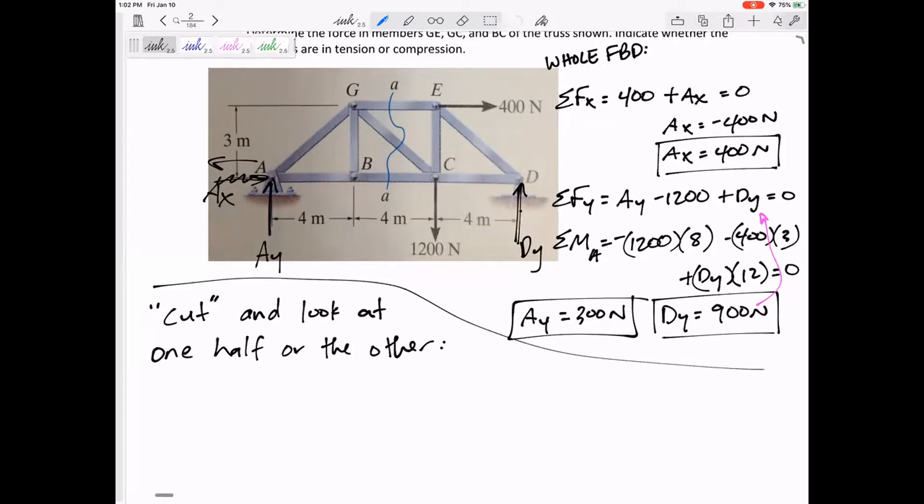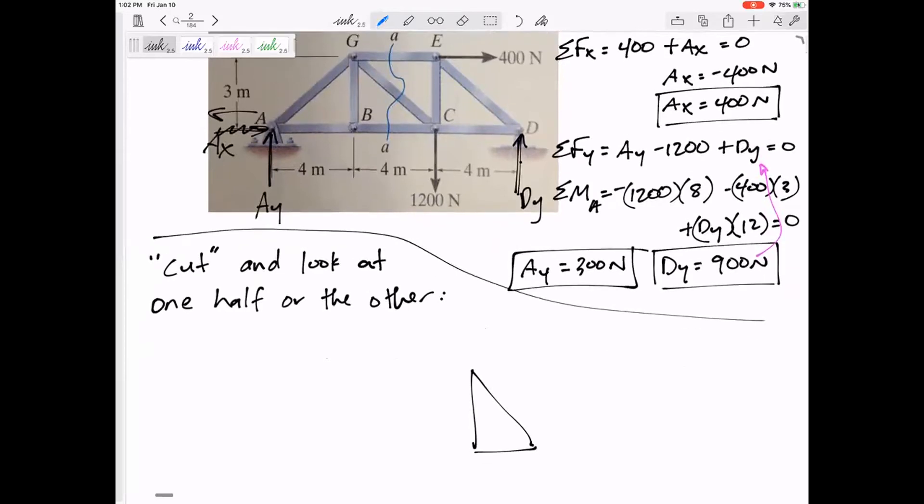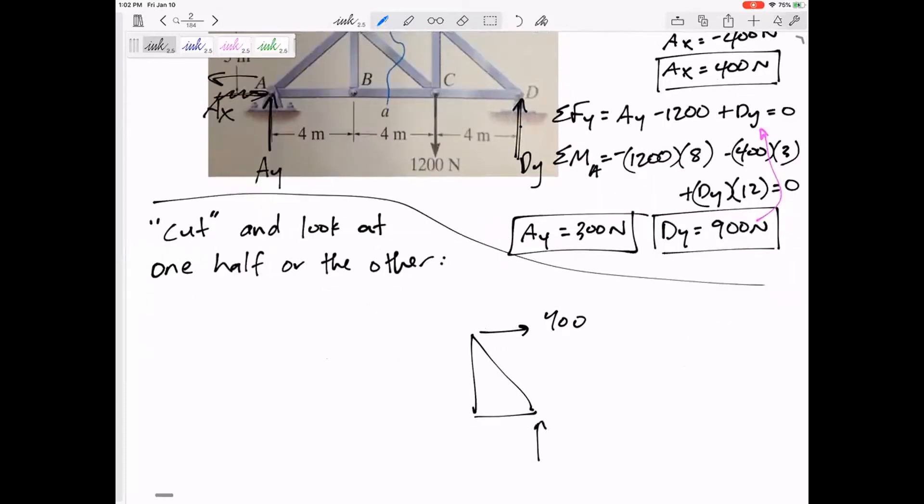You can look at either half of it. I'm going to keep this half. I still have that 400 newtons. We solved for Dy, 900, 1200.